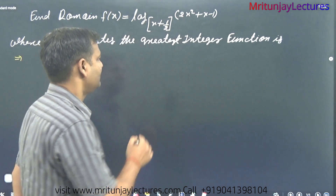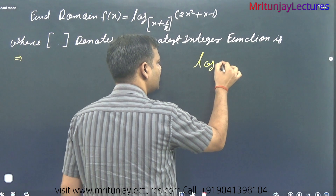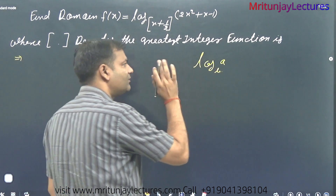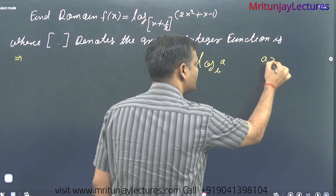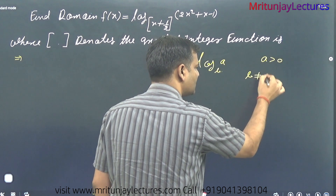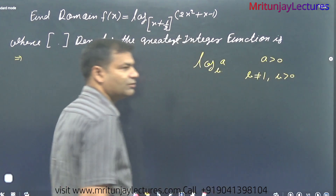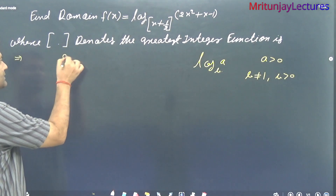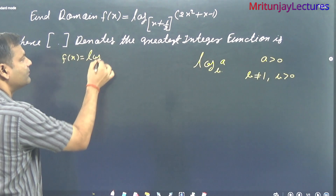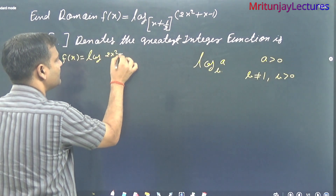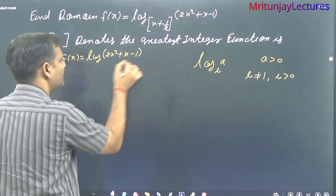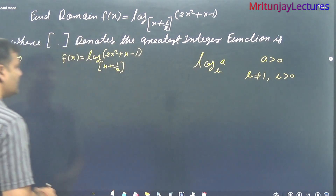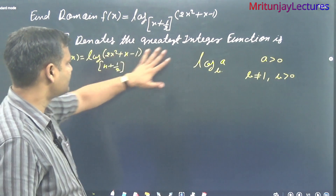For the log property: if log a at base b is given, the log function is defined only when a is greater than 0, b is not equal to 1, and b is greater than 0. So f(x) = log(2x² + x - 1) with base greatest integer of (x + 1/2).